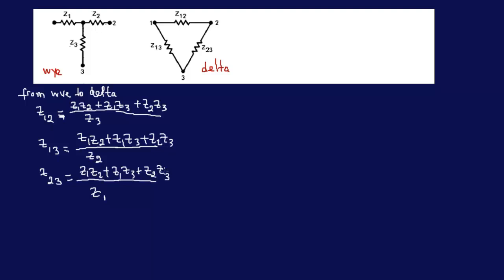So as soon as you figure out what's in the bottom, the top is the same everywhere. You don't really have to sit down and recite what's what — you just need to learn the pattern. Z12 is 'no 3' — put it in the bottom.